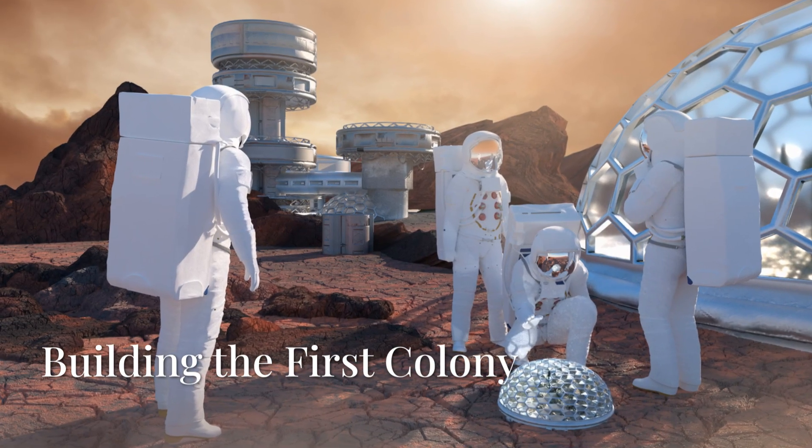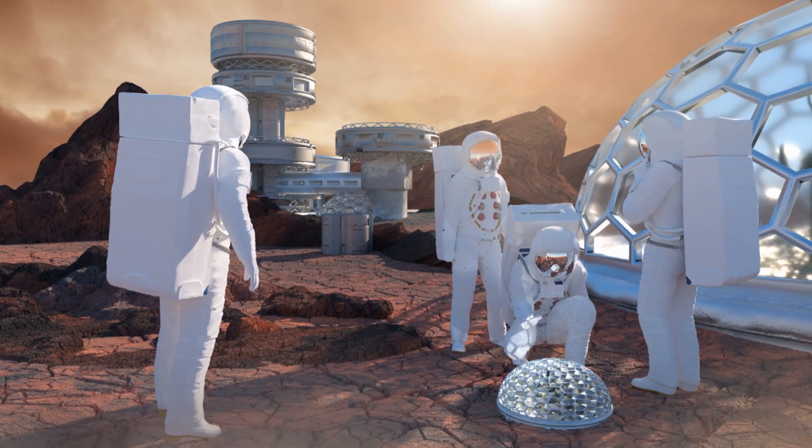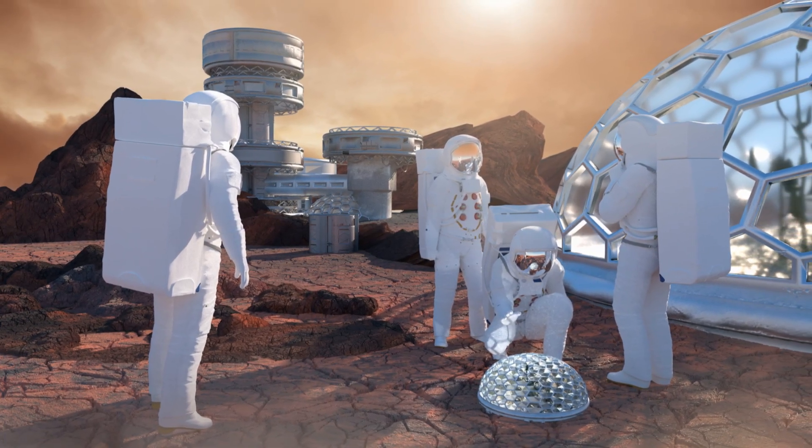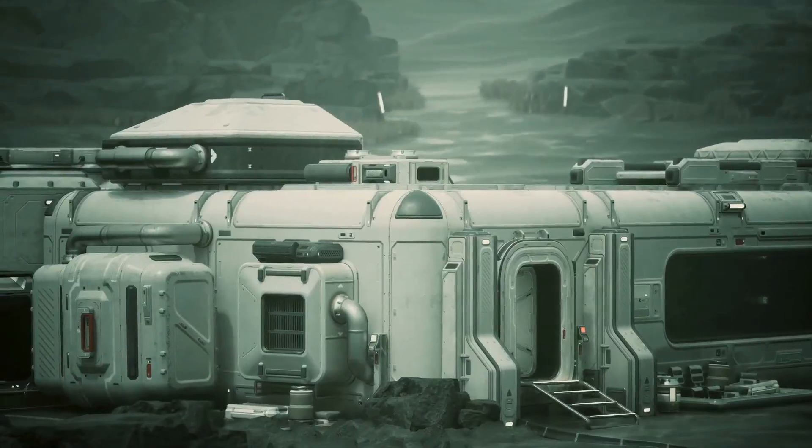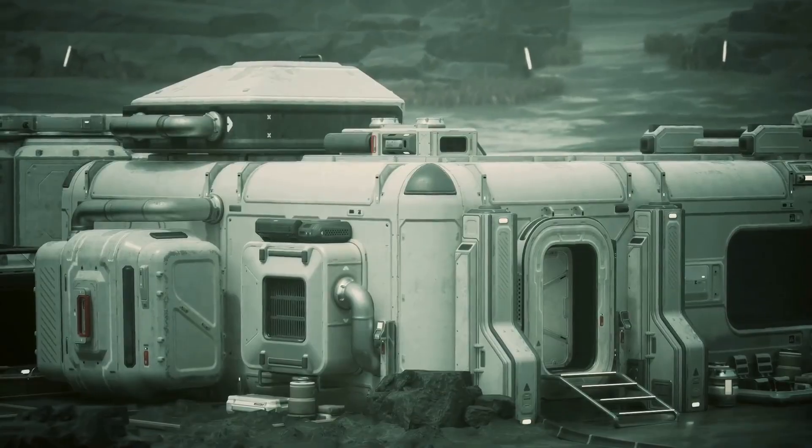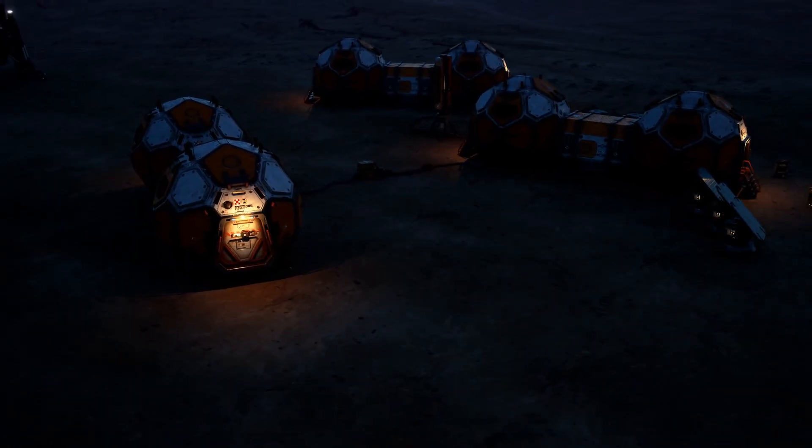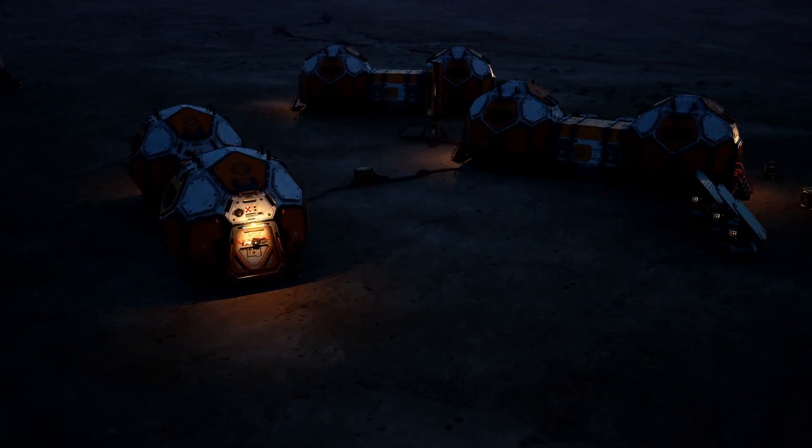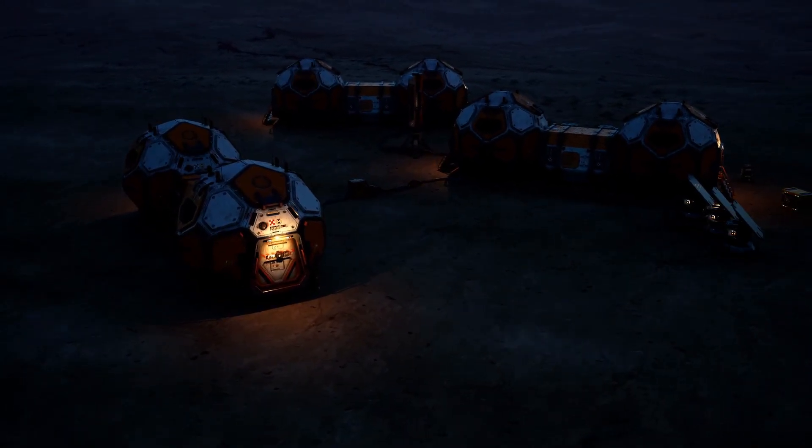So, we've landed, we've scouted the planet. Now it's time for the hard part. Building a colony where humans can live, work, and thrive. The first settlers won't be building skyscrapers overnight. We'll start with small, self-contained habitats, probably inflatable modules covered with protective shielding to block radiation. Robots and drones will do a lot of the heavy lifting, assembling structures, mining local materials, and setting up life support systems before the humans even step out.